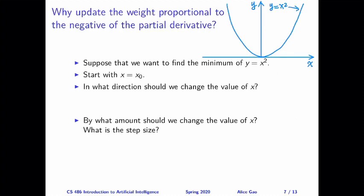So we want to find the minimum of this function. We're going to start with some arbitrary value for x, say x0. And then let's look at, to minimize this function, in what direction should we change the value of x and by what amount. First of all, let's look at direction. Well, the direction is going to depend on whether we start from the left-hand side of the minimum or the right-hand side of the minimum.